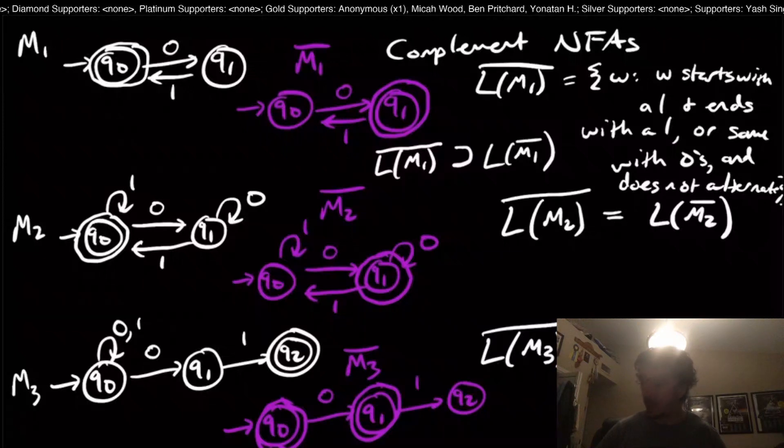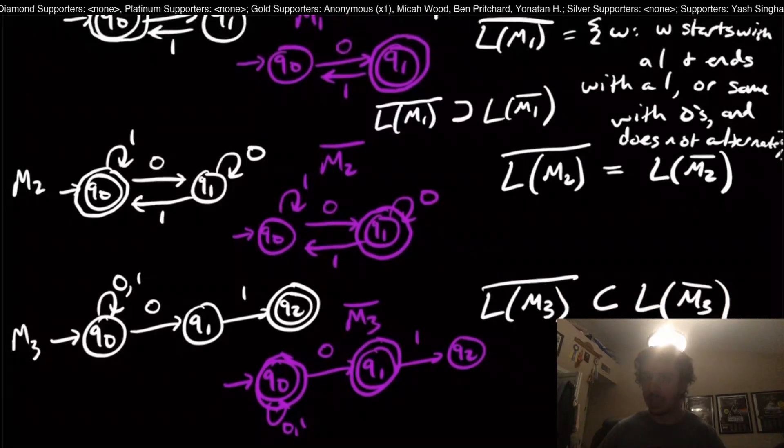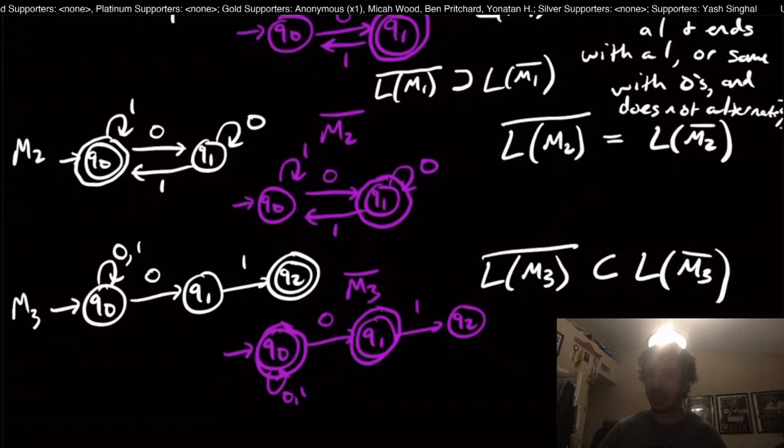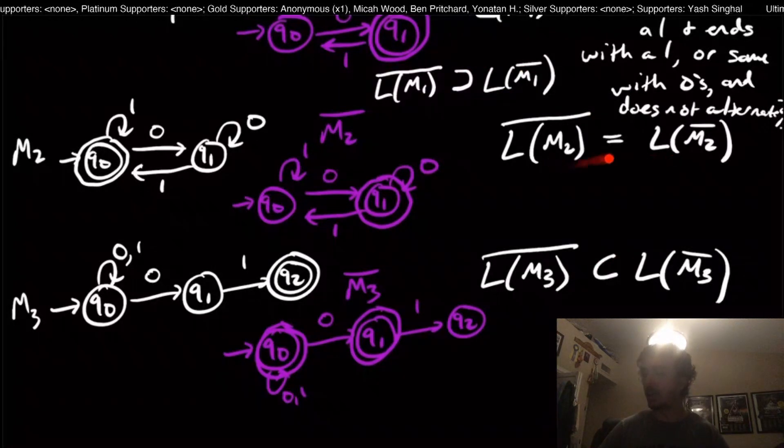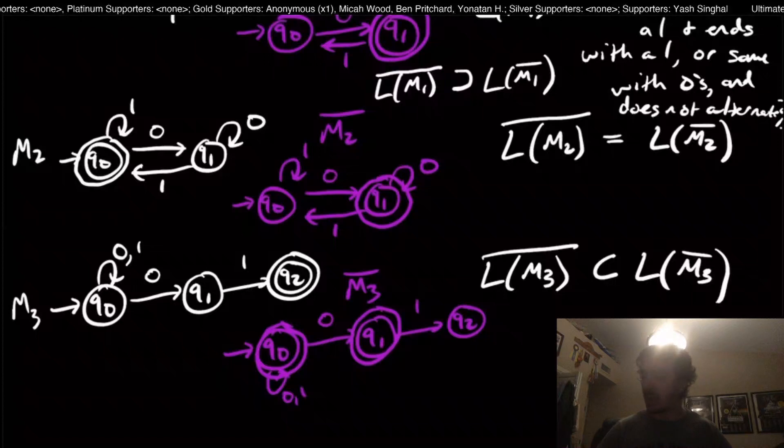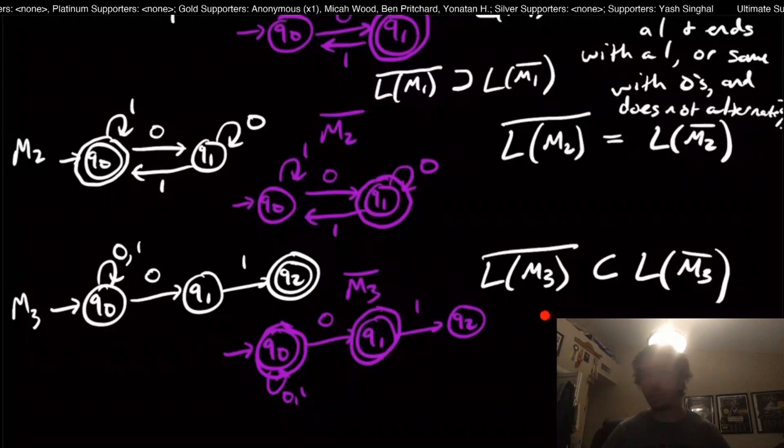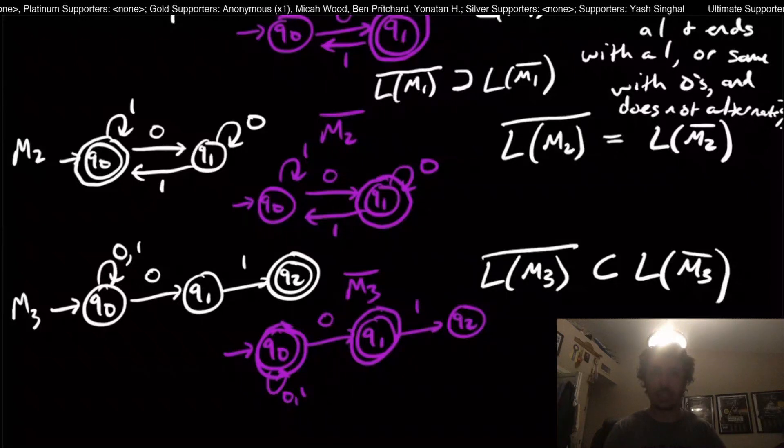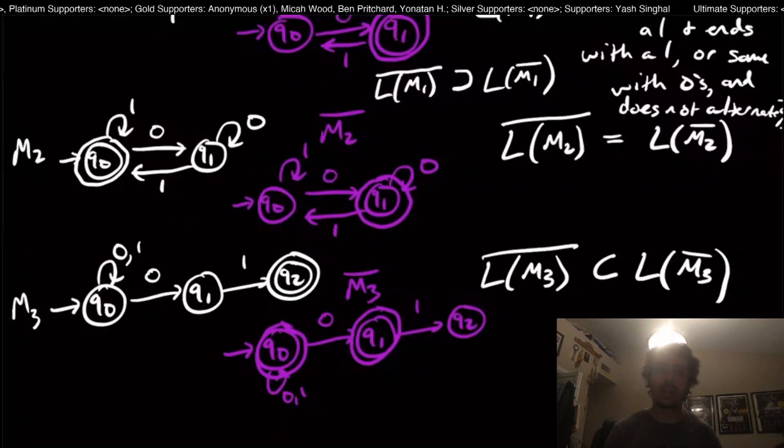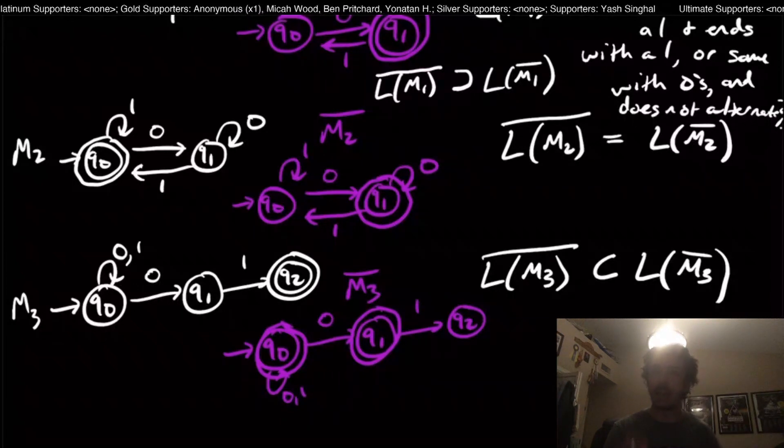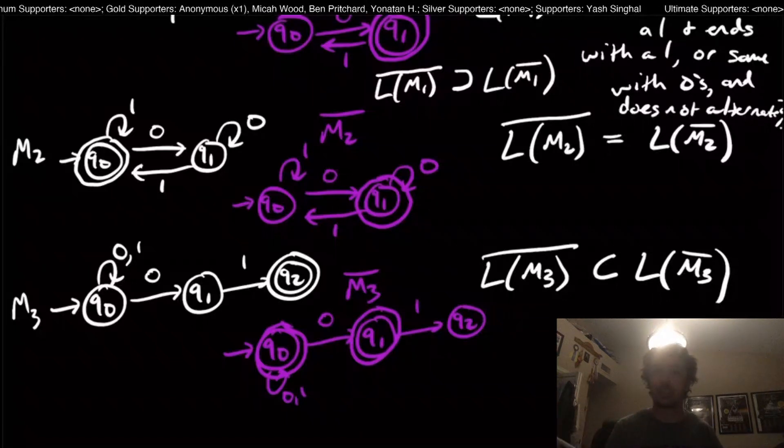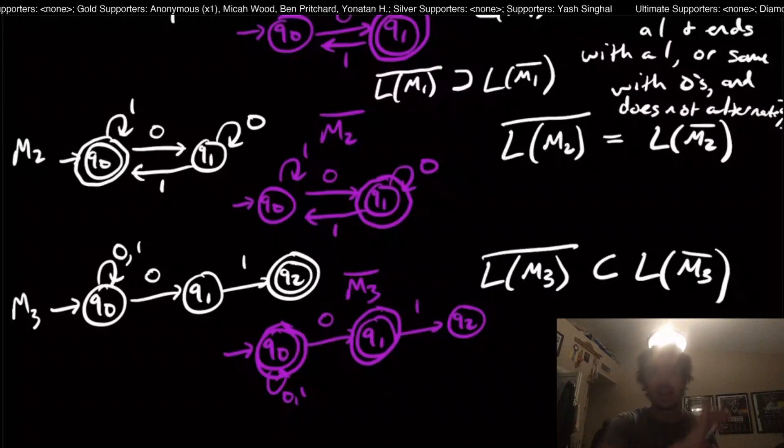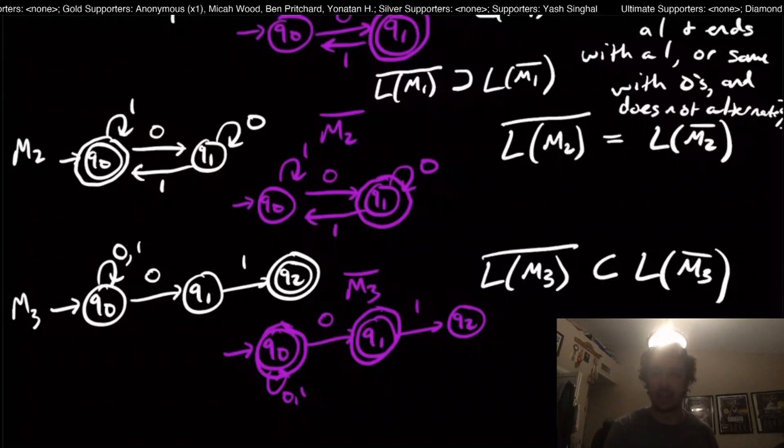In fact, what we can actually see here pretty succinctly is that we have all three different possible things that can happen. With DFAs, it's always going to be equal, and with NFAs it could be any one of these things. The takeaway message here is if you want to get the complement of an NFA, either you have some crazy method that works, or just convert it to a DFA and then apply complement to the DFA.